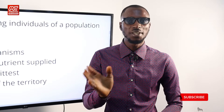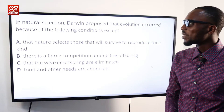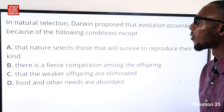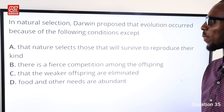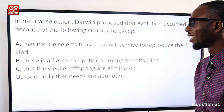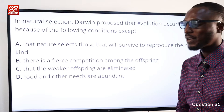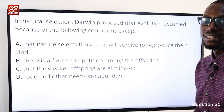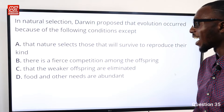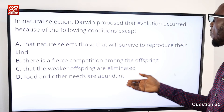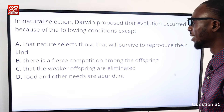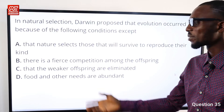Question 35: Darwin proposed that evolution occurred because of certain conditions — except option D. Option A (nature selects those that survive to reproduce) is correct; option B (fierce competition among offspring) is correct; option C (weaker offspring are eliminated) is correct. Option D — that food and other needs are abundant — is incorrect, because natural selection does not occur due to the abundance of food and other needs. So option D is correct.